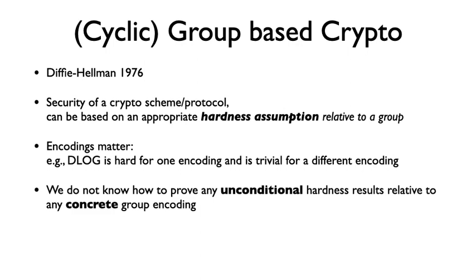Group-based cryptography received lots of attention since the famous result by Diffie and Hellman. Security of a cryptographic scheme can be based on hardness assumptions relative to a group. We must know that these assumptions are always relative to some concrete encoding of the group elements. Encodings matter.